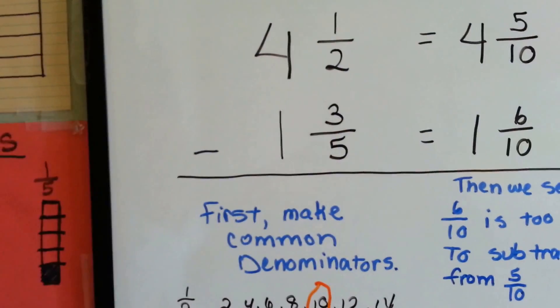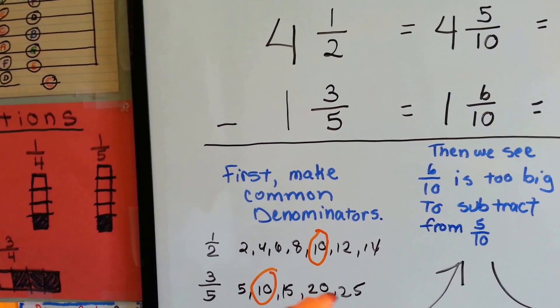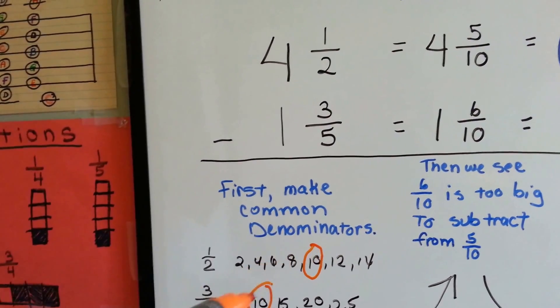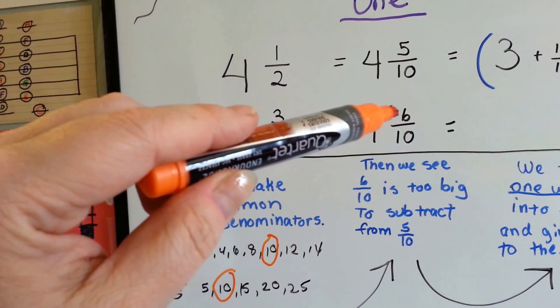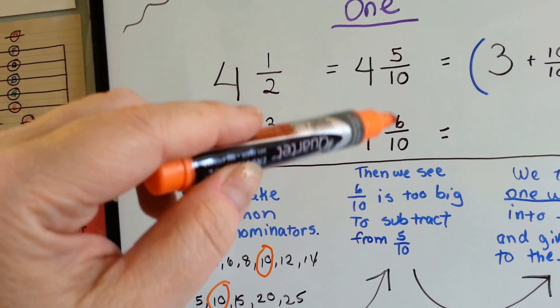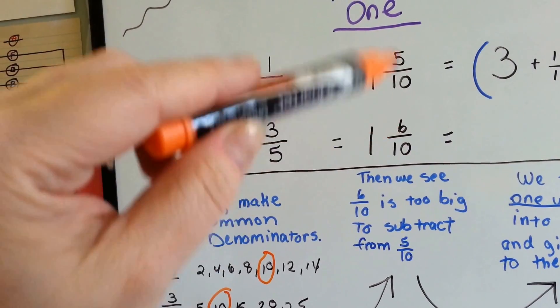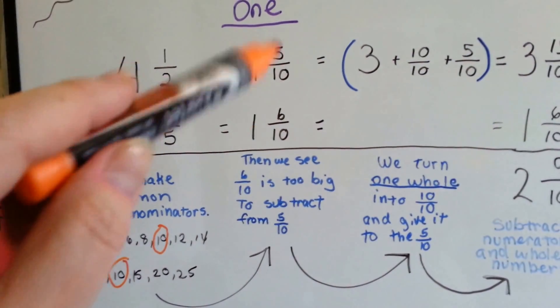The 2 and the 5 need to meet. So we make multiples of the 2 and multiples of the 5 and we decide to let them meet at 10's house. Then we see that the 6 numerator is too big to subtract from the 5 tenths numerator. So we need to rename the 4 and 5 tenths.